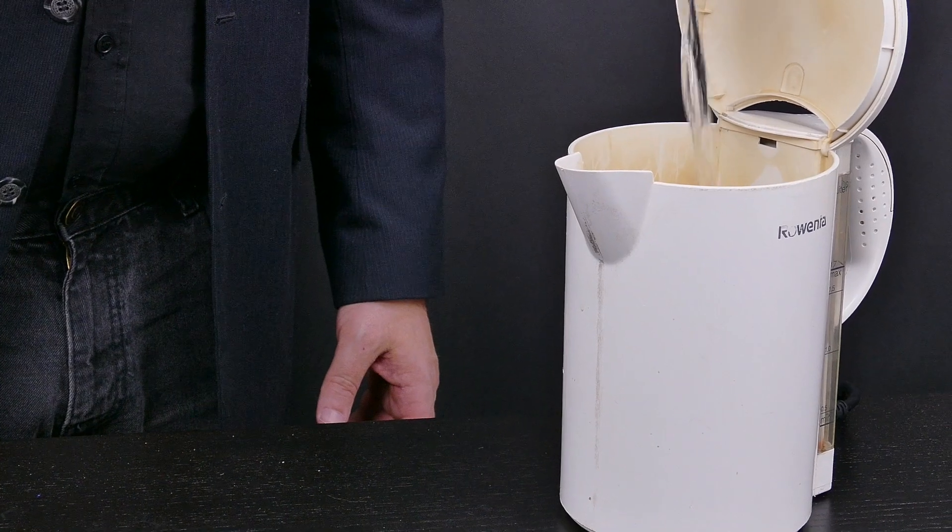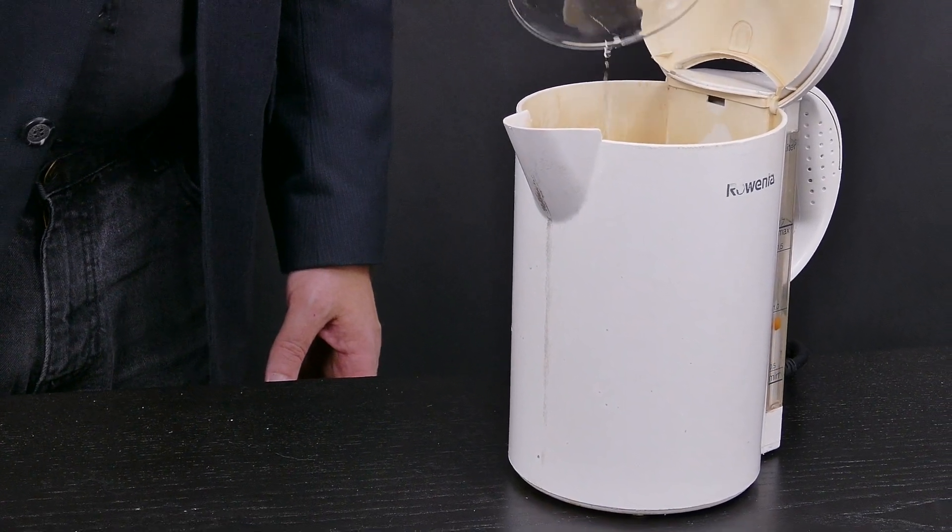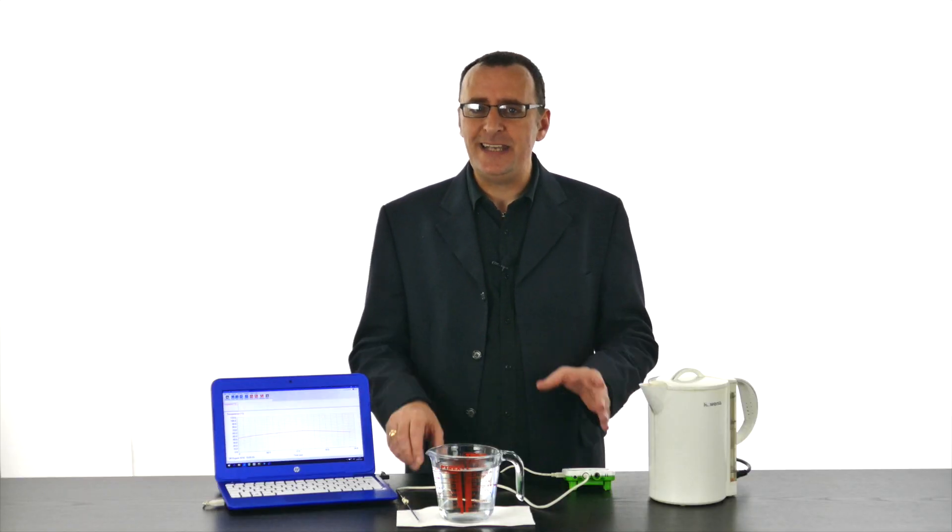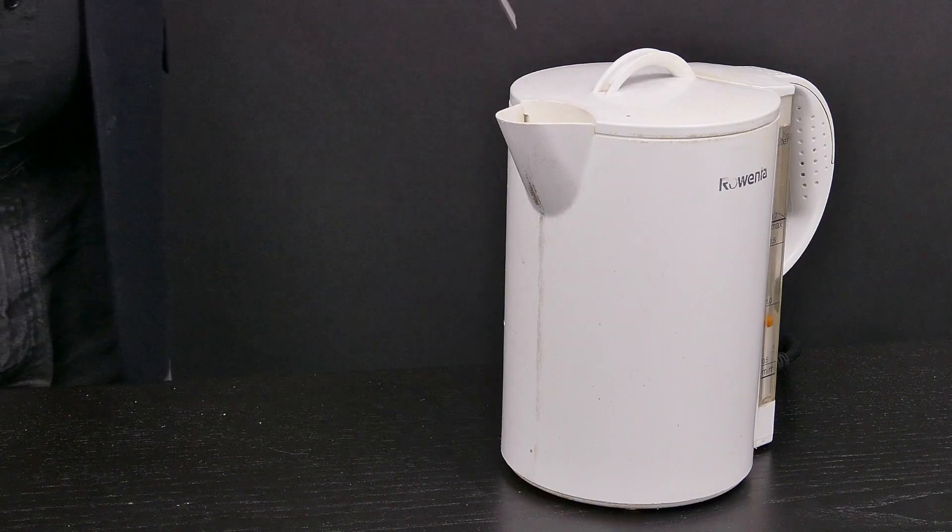Fill a jug with a measured amount of water and pour into the empty kettle. You are demonstrating control as a variable, so don't just fill it from the tap. Place the temperature sensor in the water and try to get it about halfway down.